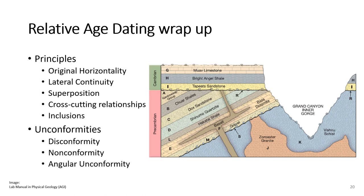The next formations in this sequence would be intrusion J, nonconformity S, formation M, and formation E, based on cross-cutting relationships, inclusions, and superposition. Try finishing this cross section and then practicing the example problems at the end of this presentation. If you're still stuck, check out the additional videos for help and come ask about it in office hours.